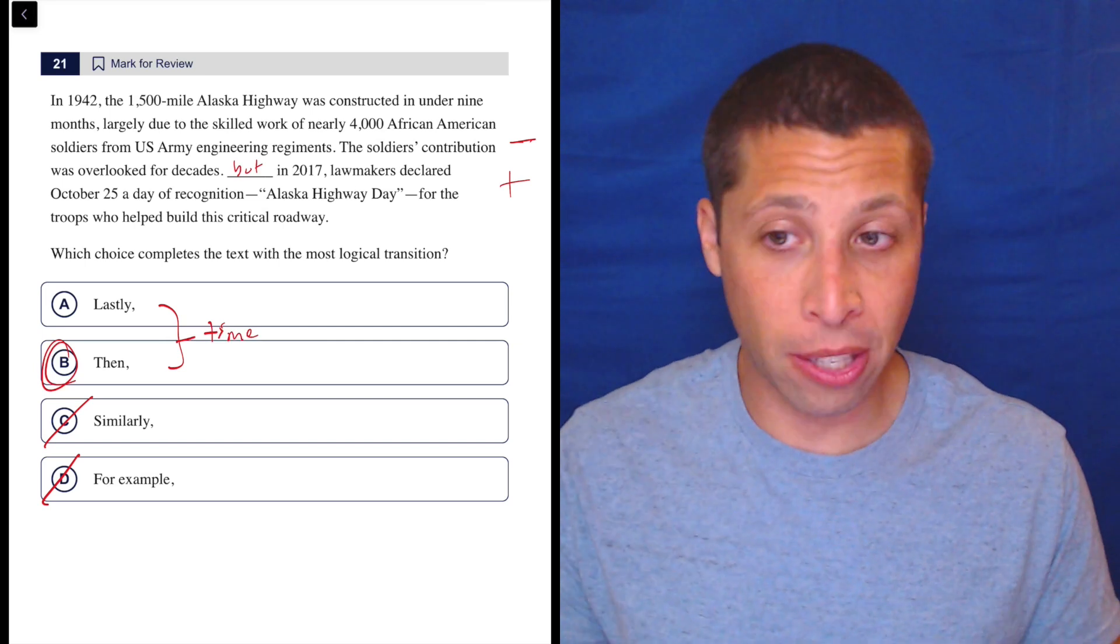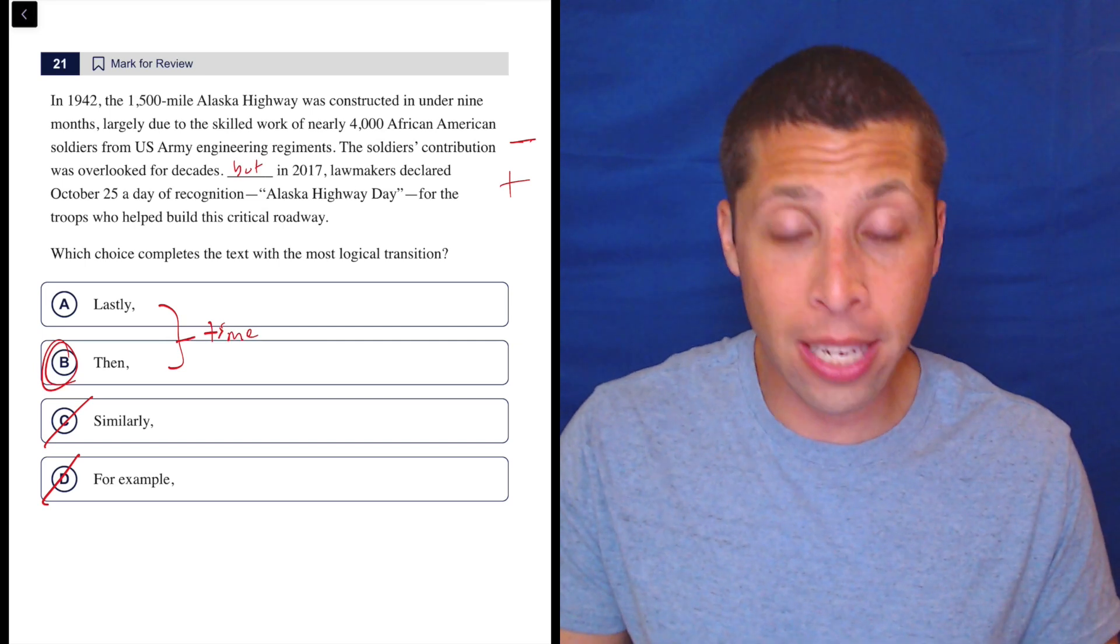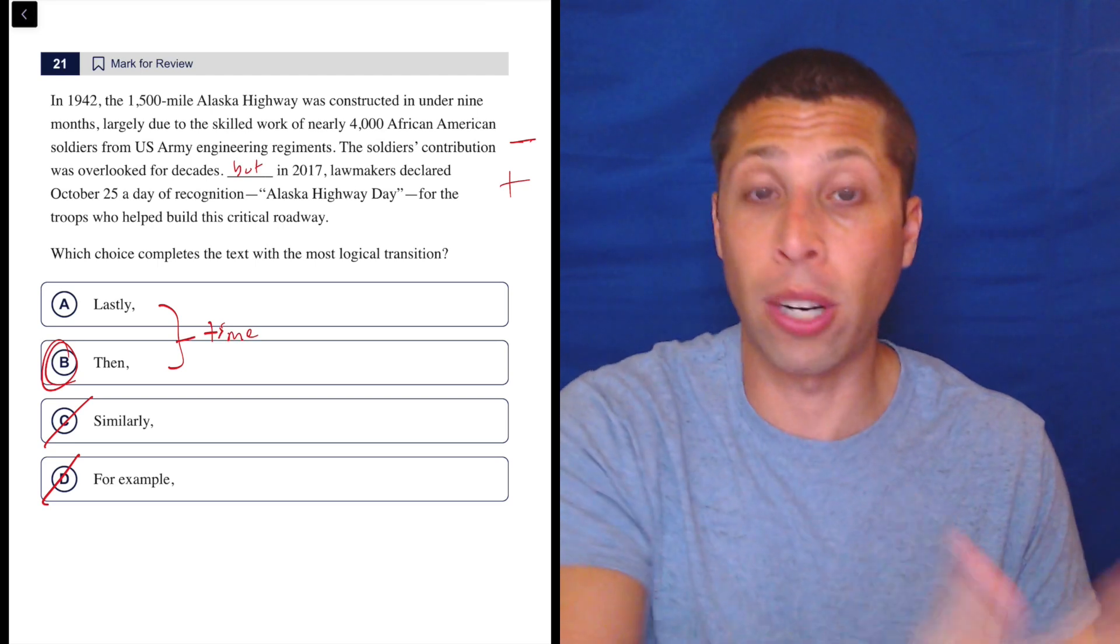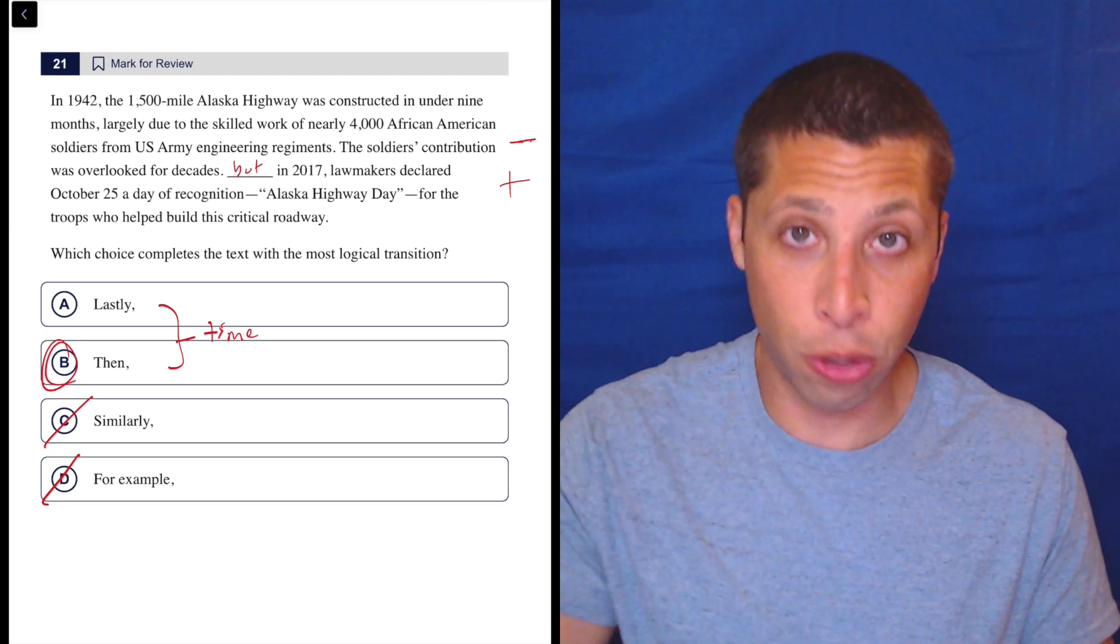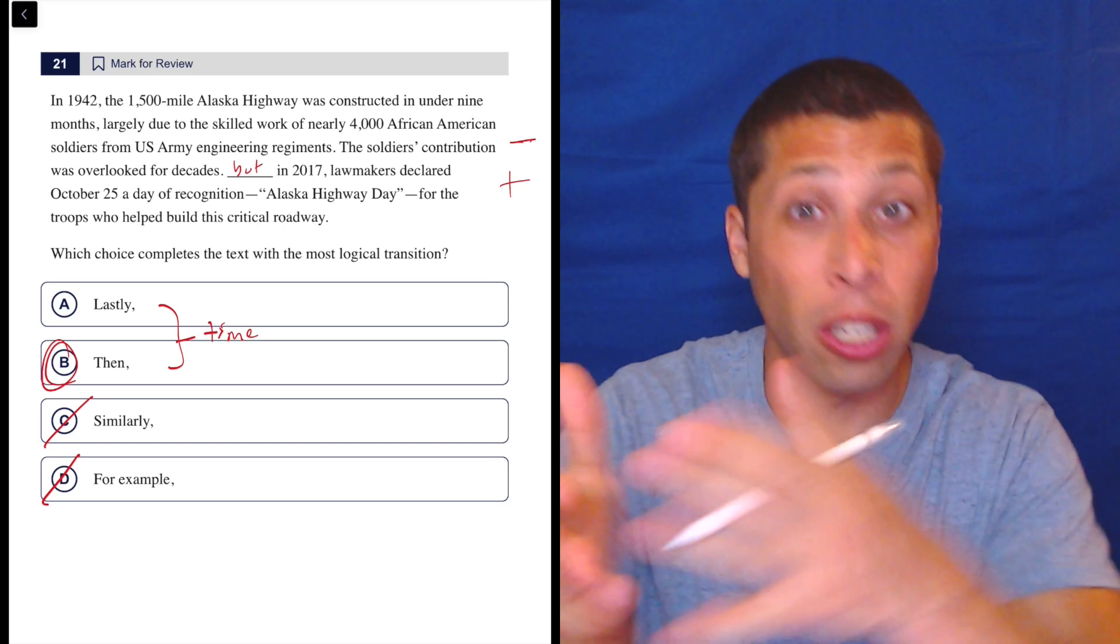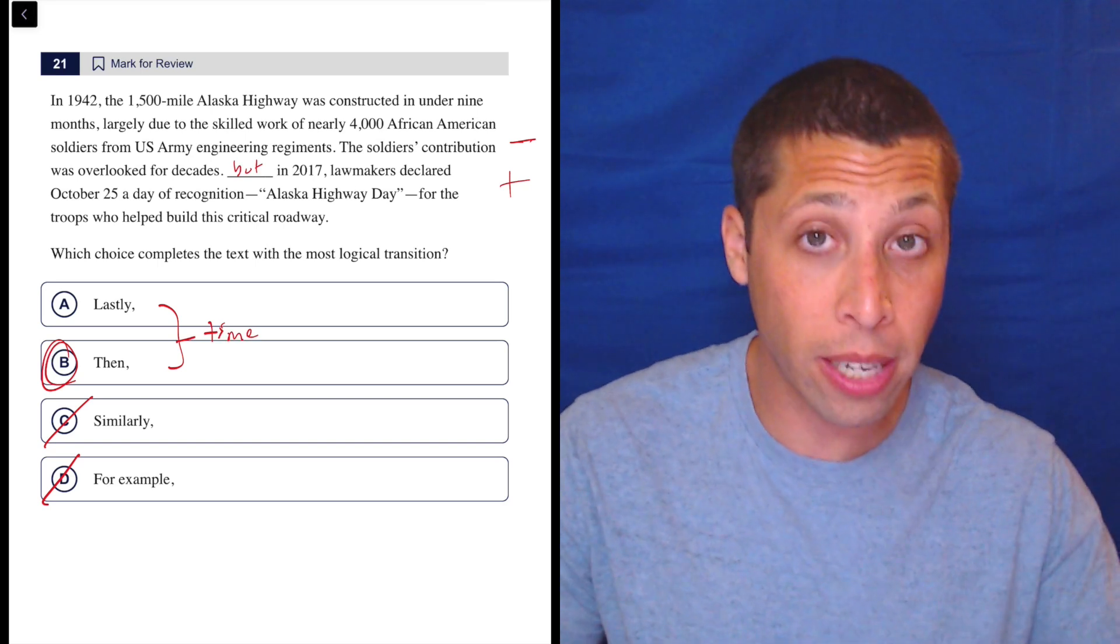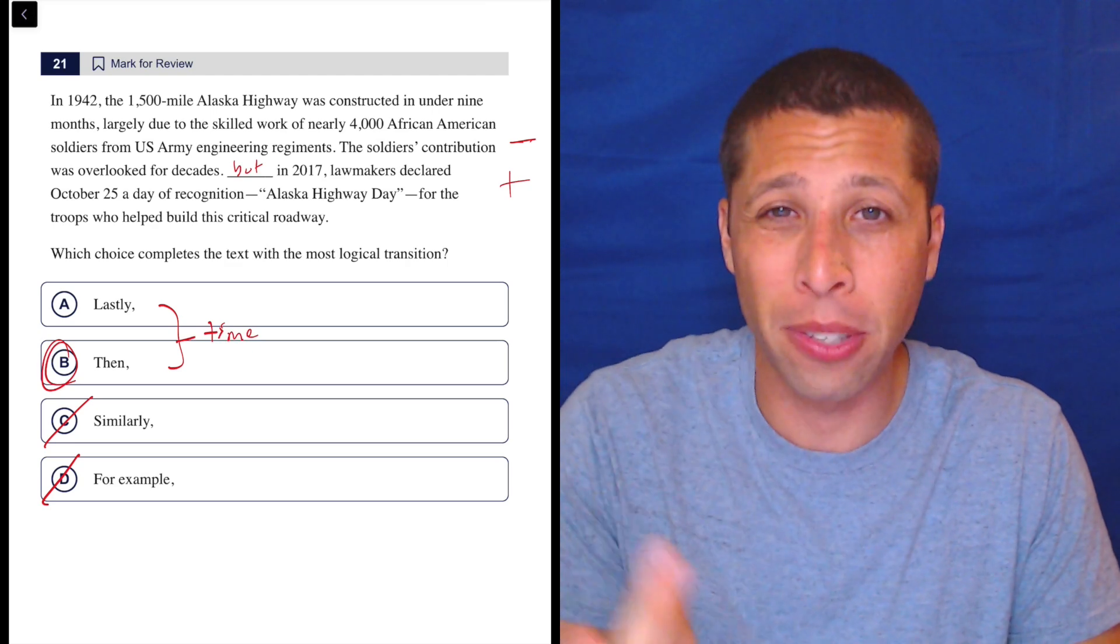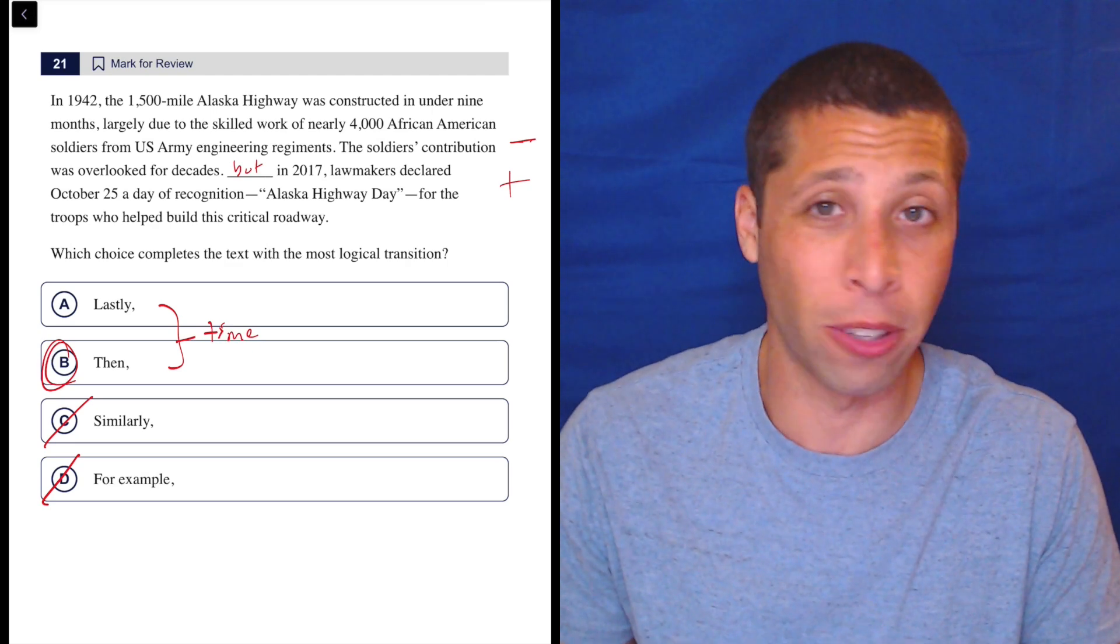Put it in the comments. Were you tempted by the word lastly or no? Then is just much simpler of a transition when it involves time. There's two events happening in order. We're emphasizing the order because we're trying to make a point that it took a long time for them to get recognized. So yeah, it's not multiple steps. It's just two. So then is the only thing that makes sense here.